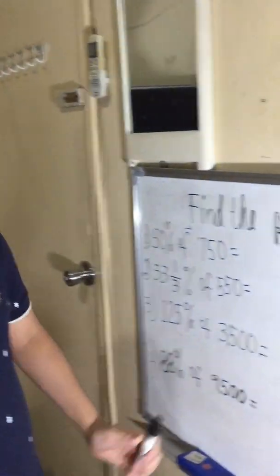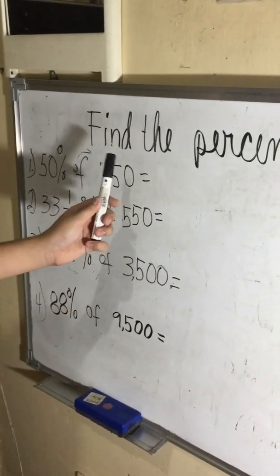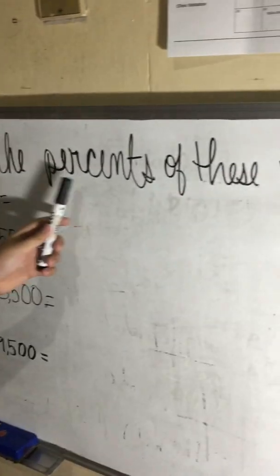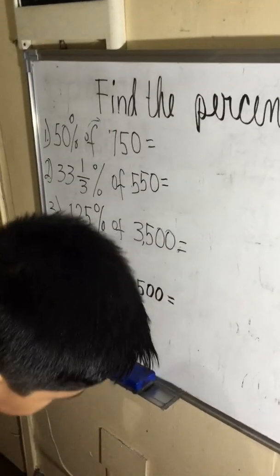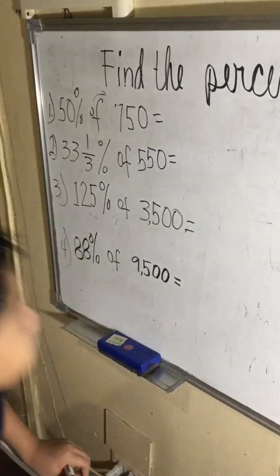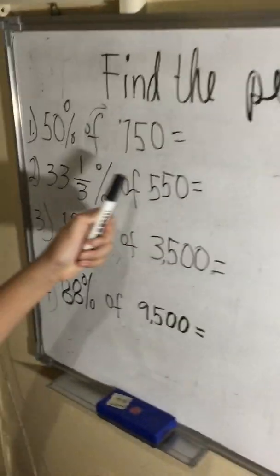Hello guys, welcome back to my channel where today we're going to discuss how to find the percent of a number. So here on number one: 50% of 750.